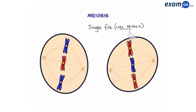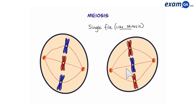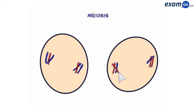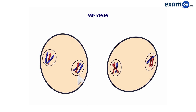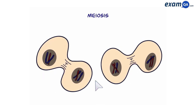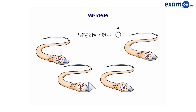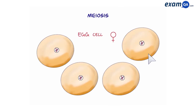Again, the centrioles appear and produce spindle fibers. This pulls apart the sister chromatids. Now we form two sets of chromosomes in each cell. A nucleus envelops each set of chromosomes, and once again the cell begins to divide, producing four daughter cells. In a male, they can turn into sperm cells, and in a female, they will turn into egg cells.